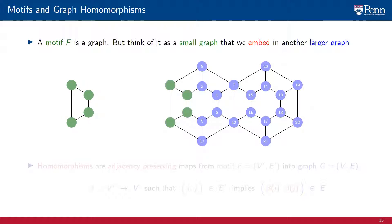Another possible motif is the cycle graph with four nodes. This motif can be embedded into the large graph on the right as shown, and it can also be embedded in other places. An important observation is that the number of ways in which we can embed the cycle motif is, in all likelihood, different from the number of ways in which we can embed the star motif.